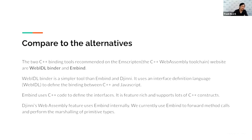Compared to the alternatives, the other two C++ binding tools available for Emscripten — which is the C++ WebAssembly toolchain — are WebIDLBinder and EMBind. WebIDLBinder is a simpler tool that uses a WebIDL interface definition language to define the binding between C++ and JavaScript. EMBind instead uses pure C++ code to define the interfaces. It is very feature-rich and supports many C++ constructs. Genie's WebAssembly feature at the very low level actually uses EMBind internally as an implementation detail — we currently use EMBind to forward method calls and perform some primitive type marshalling.